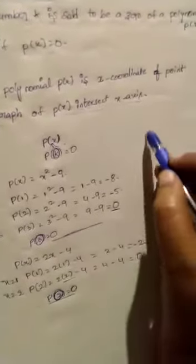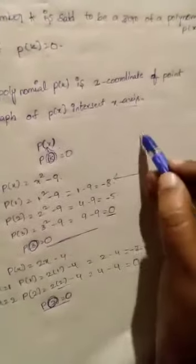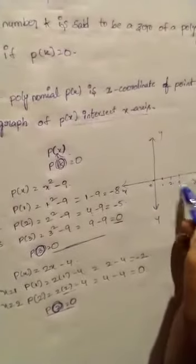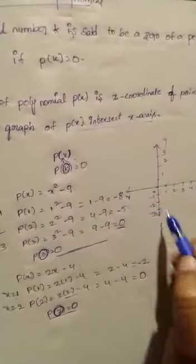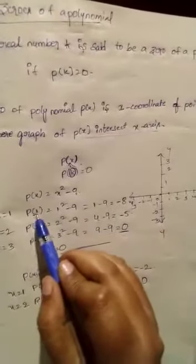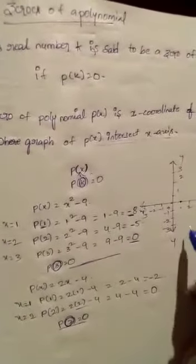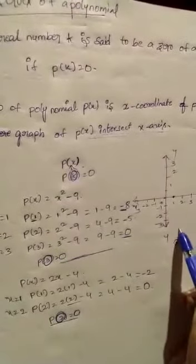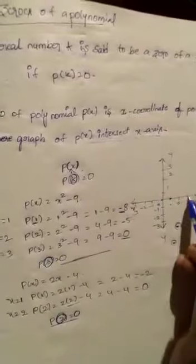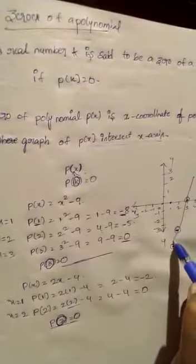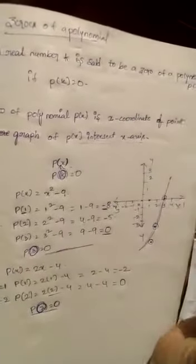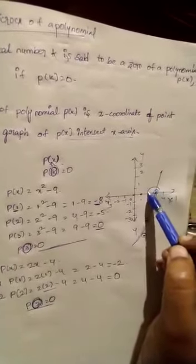This is the y-axis and x-axis drawn with the origin at zero. Plotting the points: when x equals one, p of one is minus eight, giving point (1, -8). When x equals two, p of two is minus five, giving point (2, -5). When x equals three, p of three is zero, giving point (3, 0). Drawing the graph through these points, we can see the curve intersects the x-axis at point (3, 0), where the y value equals zero. So three is called the zero of the polynomial p of x.